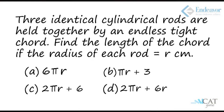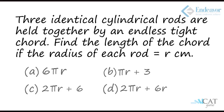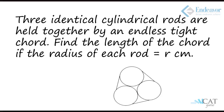Suppose we have three cylindrical rods which are tied up with an endless chord. When you look at the top view of this, it will look like the diagram given here. By observing the diagram we can say that the three identical rods form three circles and there is an endless chord tied along with it. We are supposed to find out the length of this rope, and it is given to us that the radius of the rod is r centimeters.